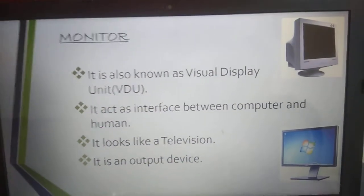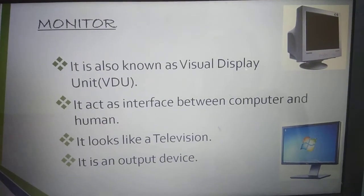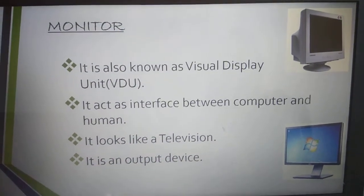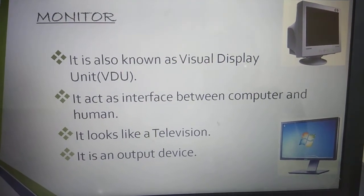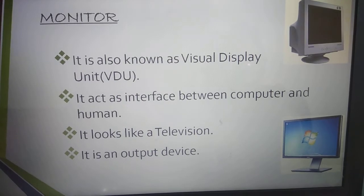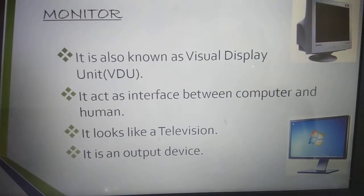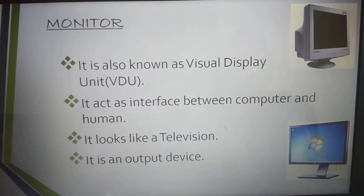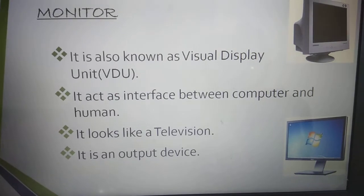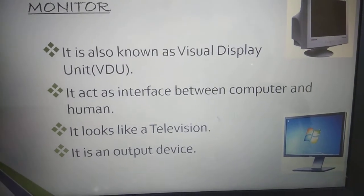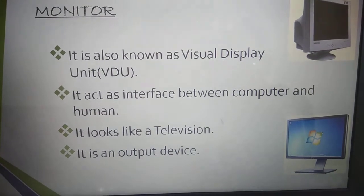First one is monitor. It is also known as visual display unit, VDU. It acts as interface between computer and human. This is a middleman between the person and computer that makes a relationship with us. If we work with something, we do it with monitor. It looks like a television.